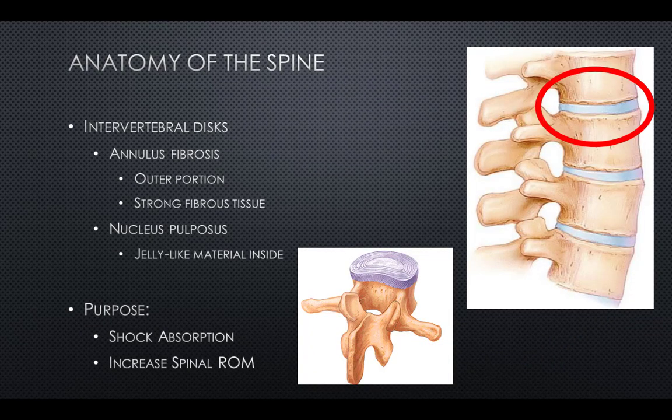An intervertebral disc lies between adjacent vertebrae in the vertebral column. Each disc forms a fibrocartilaginous joint, or symphysis joint, and allows slight movement of the vertebrae, acting like a ligament to hold them together. Their role as shock absorbers in the spine is crucial. Discs consist of an outer fibrous ring, the annulus fibrosis, which surrounds the inner gel-like center called the nucleus pulposus.